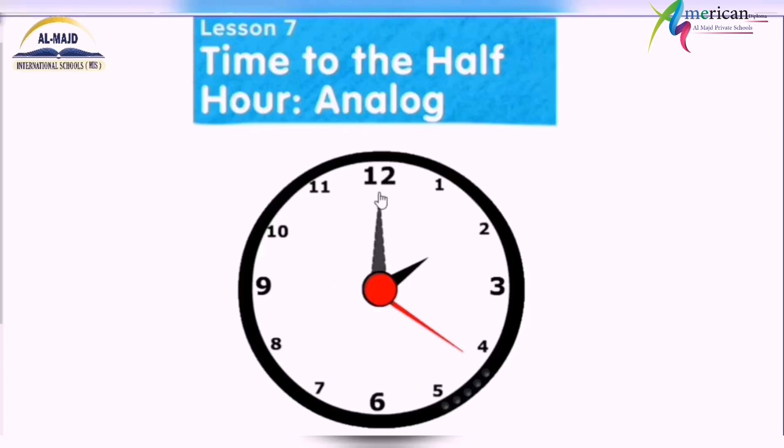When the small hand is on two, for example, and the minute hand on twelve, we say two o'clock. So here's three o'clock, four o'clock, five o'clock, six o'clock, and so on. Today we're studying the half hour.